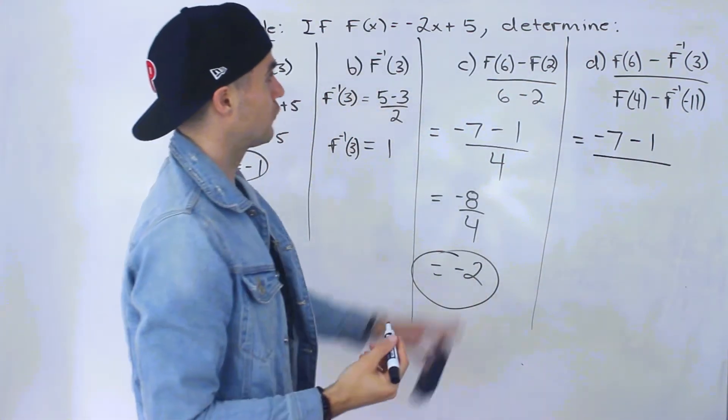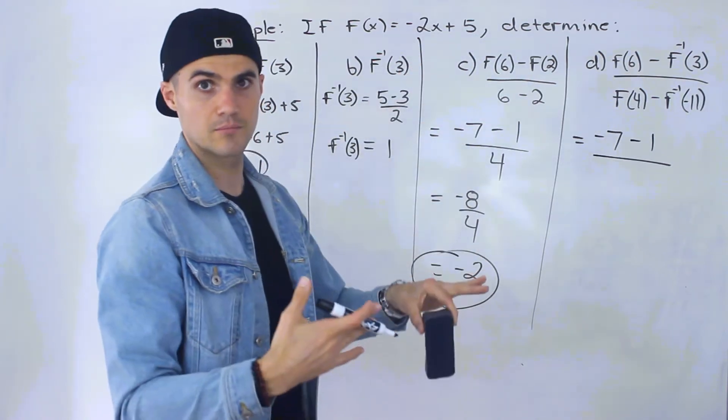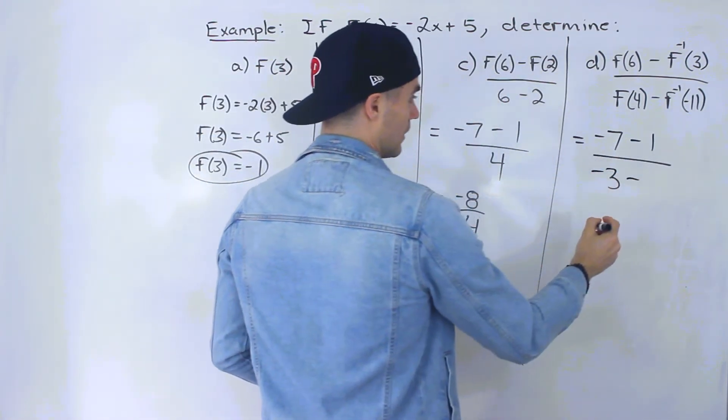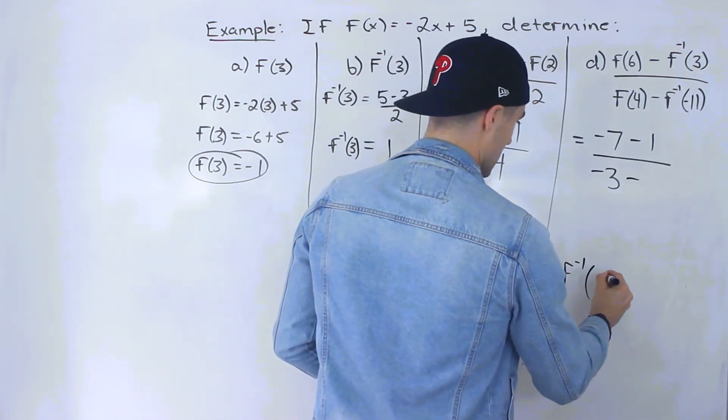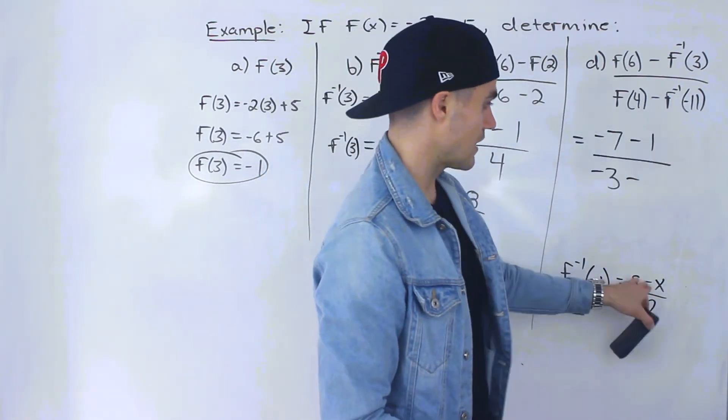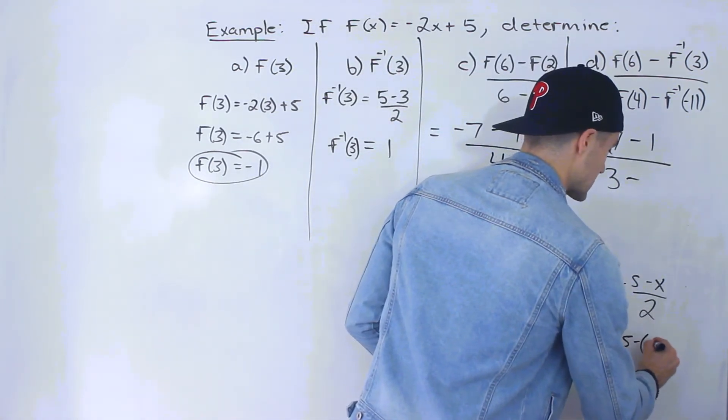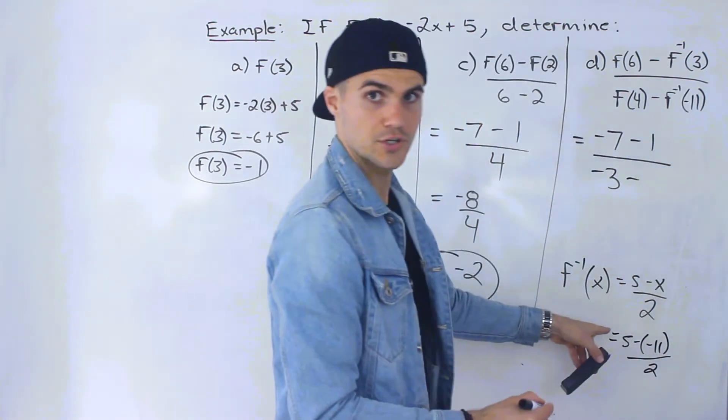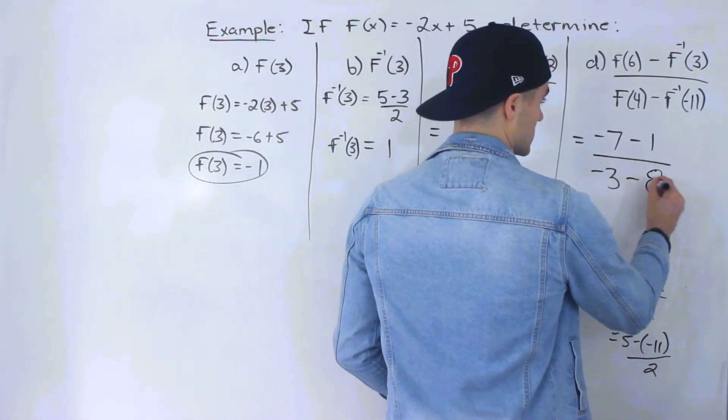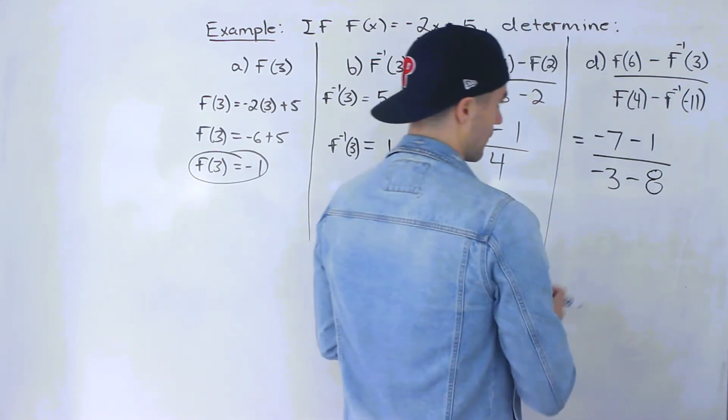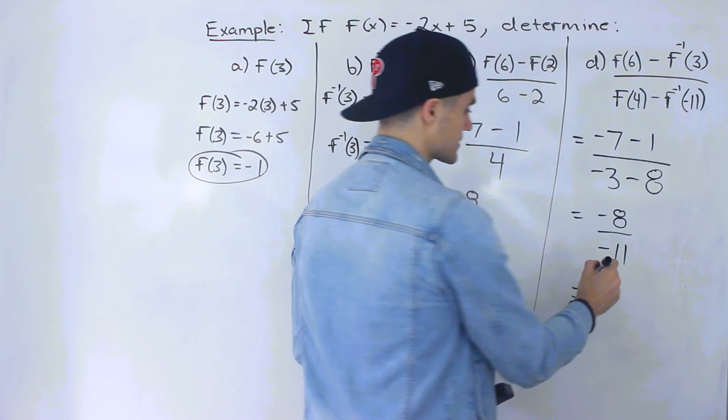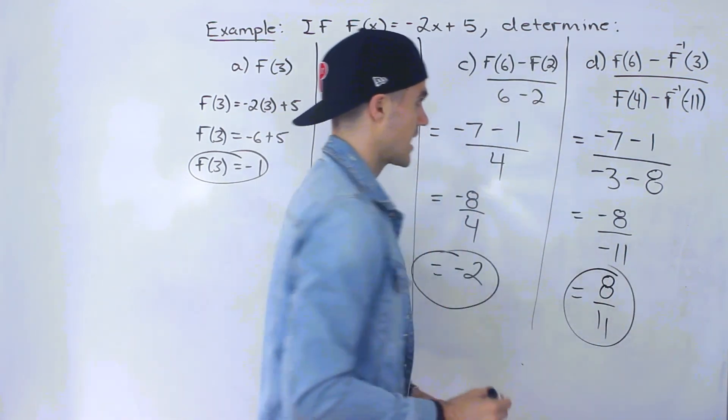Now f(4), we would plug in 4 for the x value of the function. So -2 times 4 is -8, plus 5 gives us -3. And then f inverse of -11. What was the expression for the inverse? It was (5 - x)/2. I erased it by accident. So if I plug in -11 here for this x value, we'll have [5 - (-11)]/2. So those turn into a positive, those two negatives. So 5 plus 11 is 16/2 gives us 8. So this would be 8. And so notice that we would end up having -8 over -11. The negatives can cancel out.